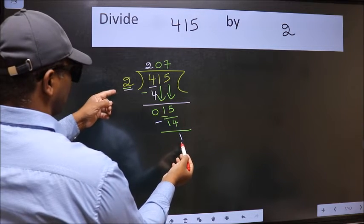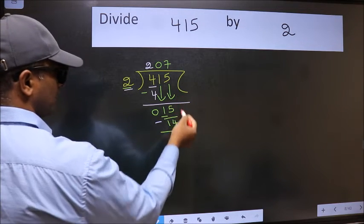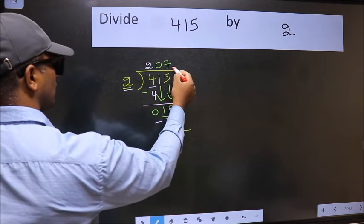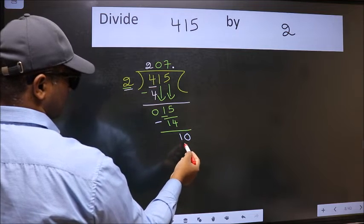1 is smaller than 2 and we don't have any more numbers to bring down. So we should put a dot and take 0. So 10.